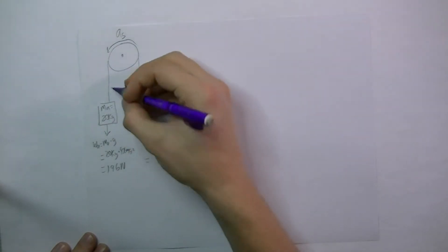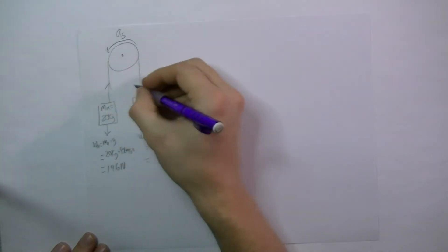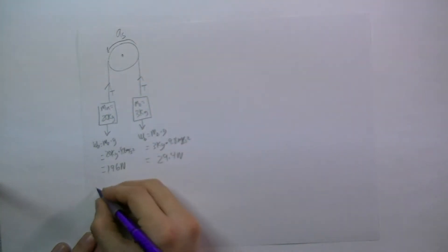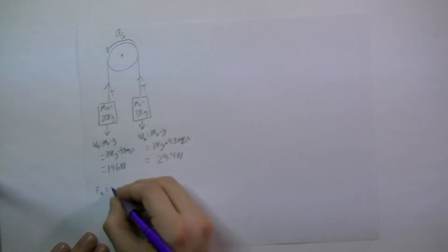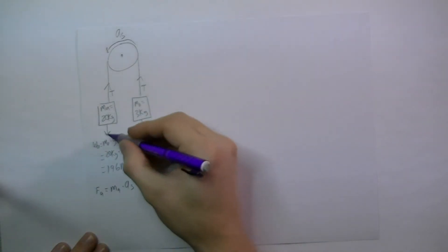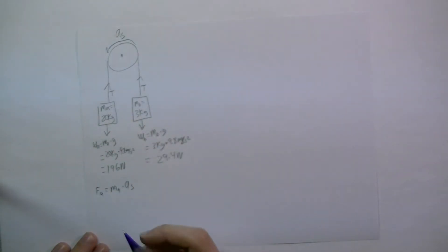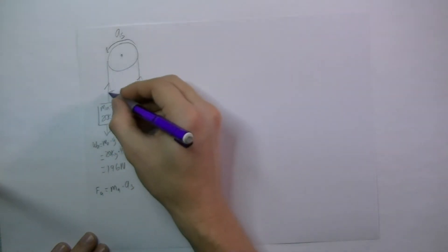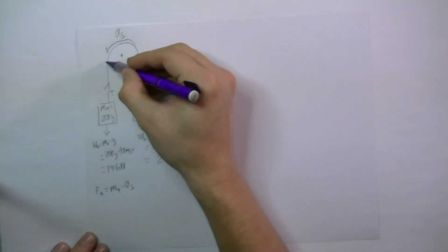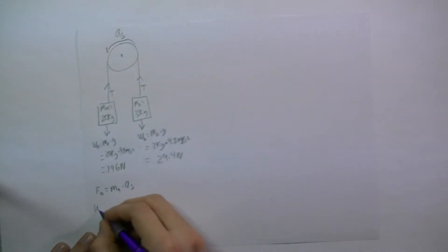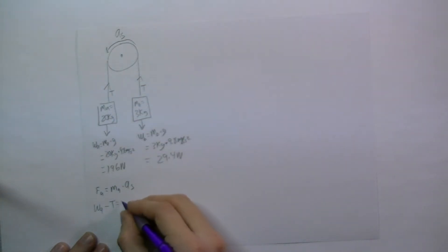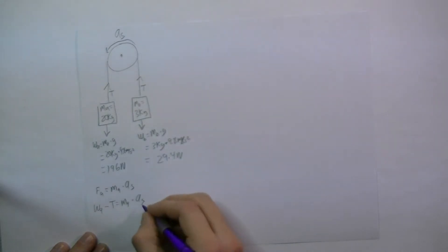The forces acting on each block are the weight and the tension in the rope. So the sum of the forces on A will equal the mass of A times the acceleration of the system. For block A, the weight is in the direction of acceleration, so we call the weight positive. The weight of A minus the tension, because it's in the opposite direction, will equal the mass of A times the acceleration of the system.